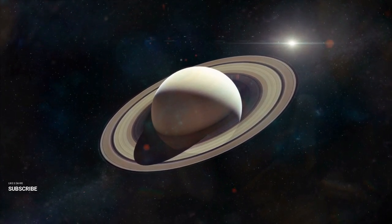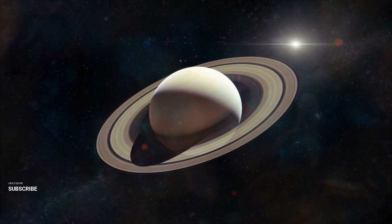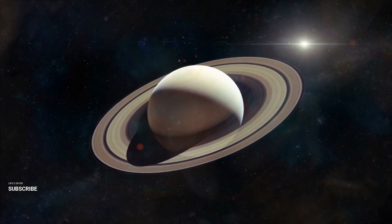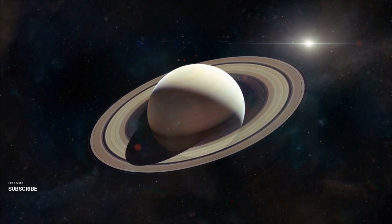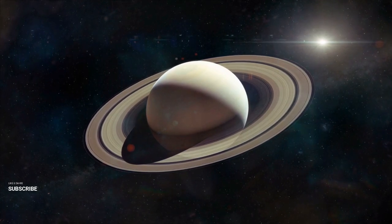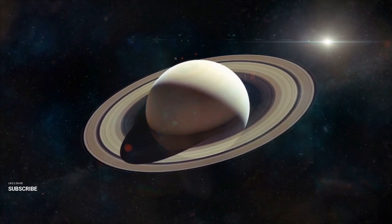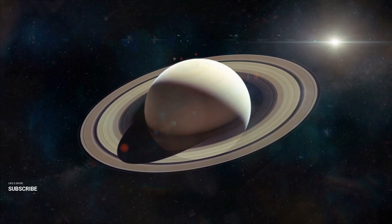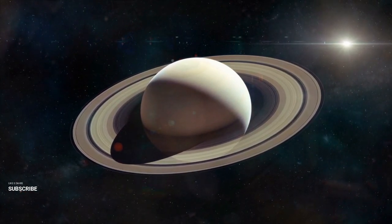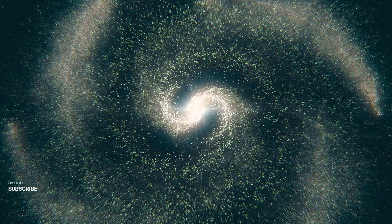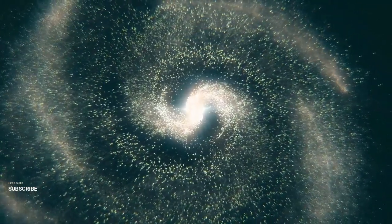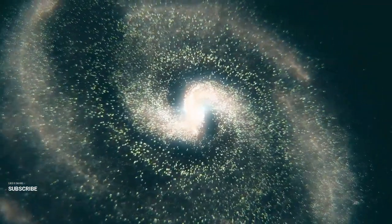Hoag's object is a peculiar galaxy, first discovered in 1950 by astronomer Arthur Hoag. At first glance, it might appear to be a simple ring galaxy. However, it's far more complex and mysterious. Located 600 million light-years away in the constellation Serpens, this galaxy is composed of a bright core surrounded by a perfectly symmetrical ring of stars. The core is made up of older, redder stars, while the outer ring consists of younger, bluer stars.